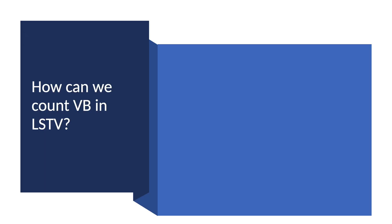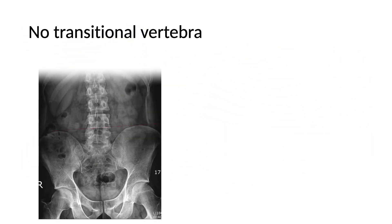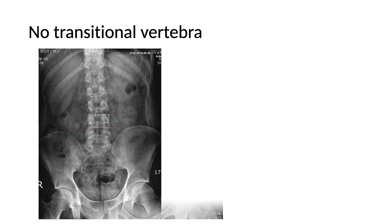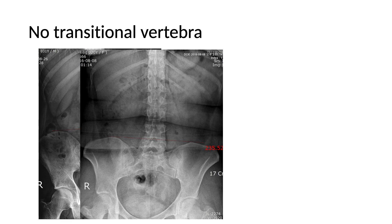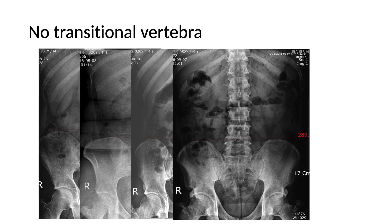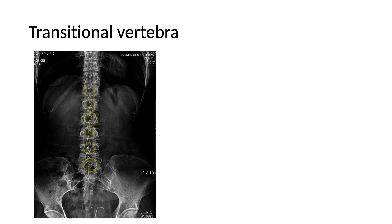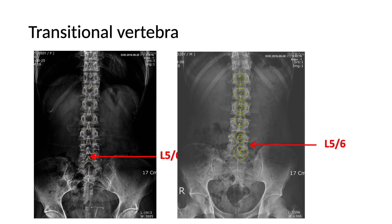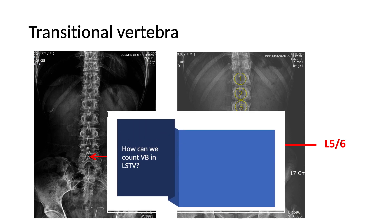There are several ways to count the vertebral body in the transitional lumbosacral vertebra. First, make a standard line at the iliac crest for counting the level — it is very easy and standard. Usually, the iliac crest line corresponds to the level of the L4-5 disc space, so the L5 body is just below the iliac crest. It looks clear-cut and standard for a normal lumbar spine, but in the transitional vertebra, it corresponds to the L5-6 disc space. Therefore, the iliac crest line cannot be used for counting the transitional vertebral level.